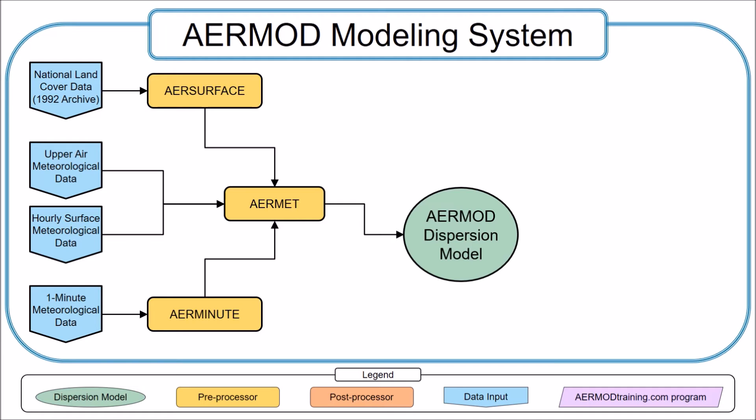AERMET also requires surface characteristics describing the land use surrounding the site. AERSURF is used to calculate these inputs from the United States Geological Survey (USGS) National Land Cover data files. And that's it for the meteorological data processing. Now we'll move on to the receptors.